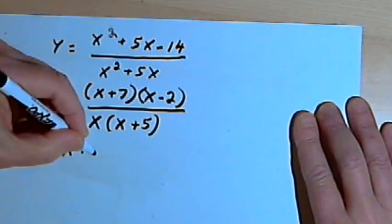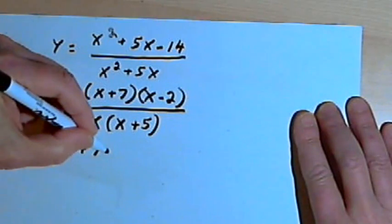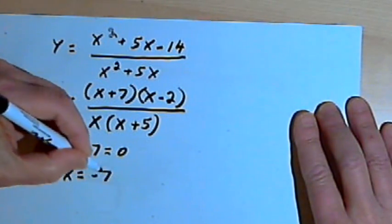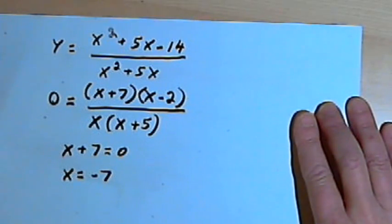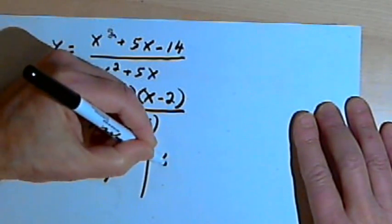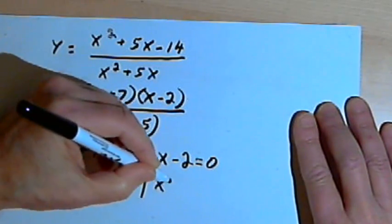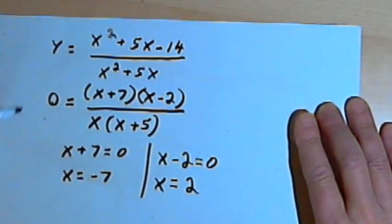So if I think in terms of x plus 7 turning into 0, that would mean x would have to equal negative 7. If I want to turn that x minus 2 into a 0, that would have to mean that x would have to equal positive 2.